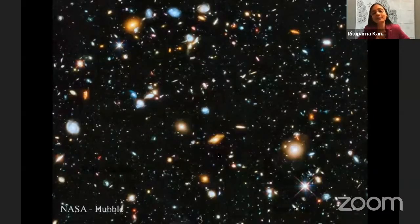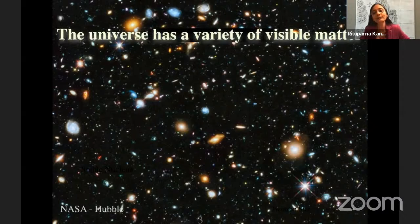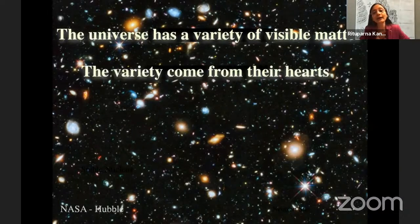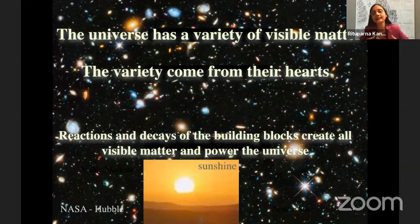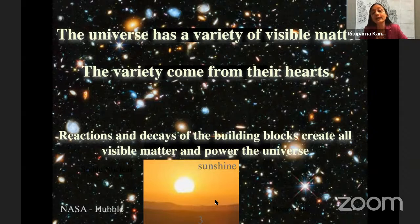As you can see from this image of a section of the universe captured by the Hubble Space Telescope, visible matter in our universe has a wide variety. This variety really originates from their hearts, and it is the reactions and decays of whatever is composing the hearts of matter that is really powering the entire universe — all the sunshine and warmth that you experience comes from reactions and decays at the heart of visible matter.